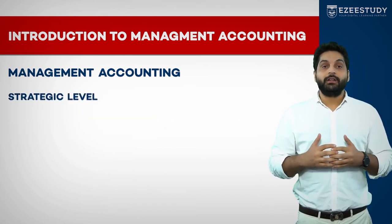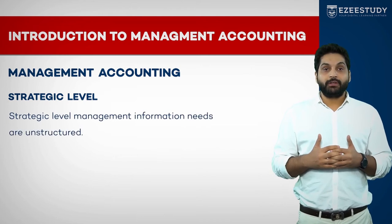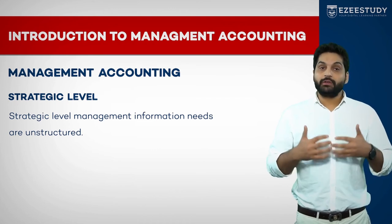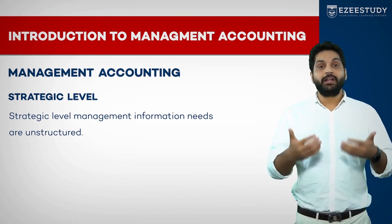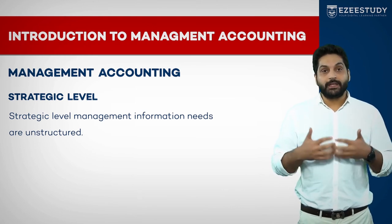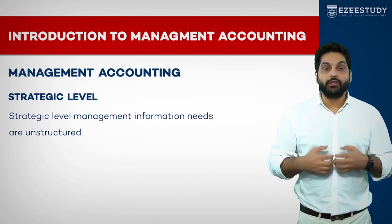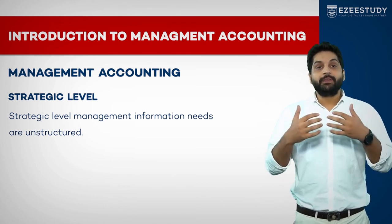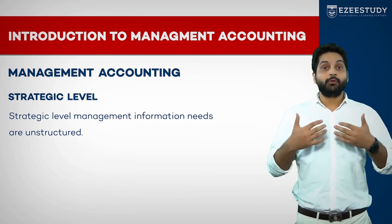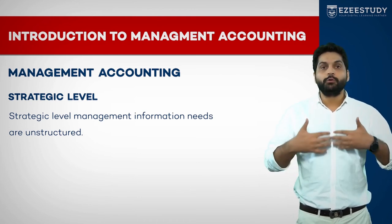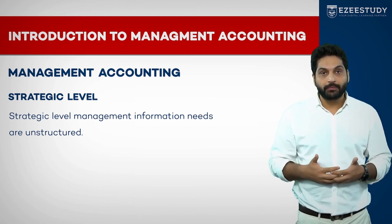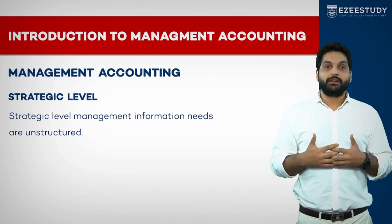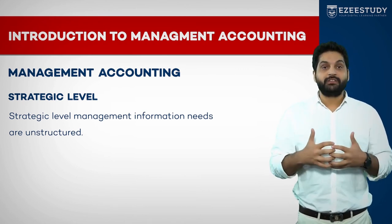At the strategic level of management, the information needs are unstructured, because the decisions are different — such as launching a new product, entering a new market, or establishing new departments or office spaces. Every such decision requires new unstructured information. Strategic level management is responsible for the entire organization.